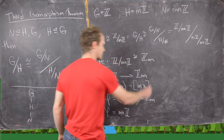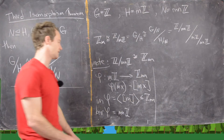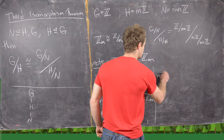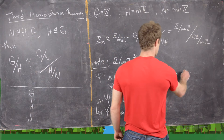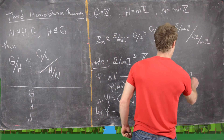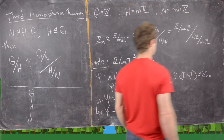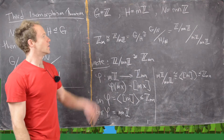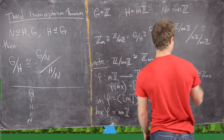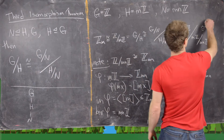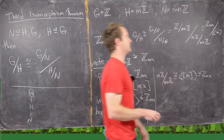Putting this all together using the first isomorphism theorem, the image of φ equals mZ mod the kernel of φ. In other words, mZ mod MNZ is isomorphic to the cyclic subgroup generated by M inside Z_MN. So we can extend this to say that this is isomorphic to Z_MN mod the cyclic subgroup generated by M.